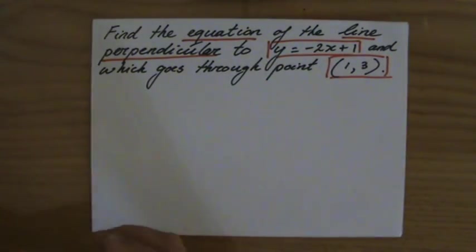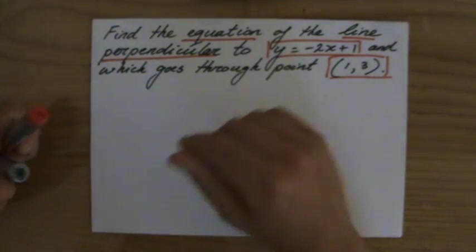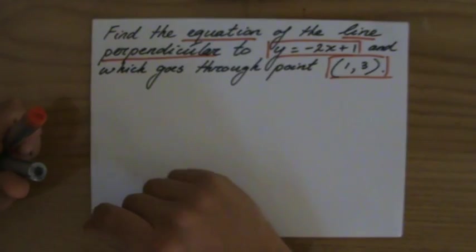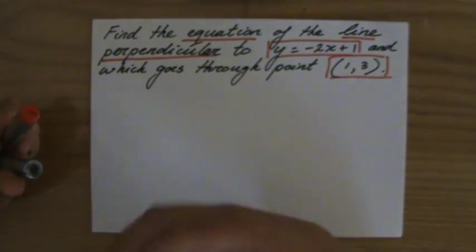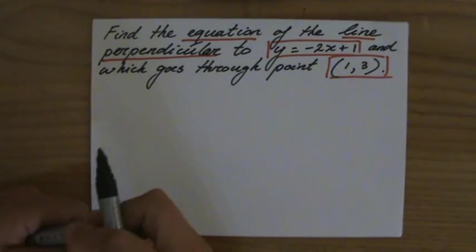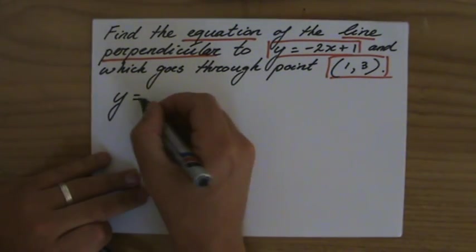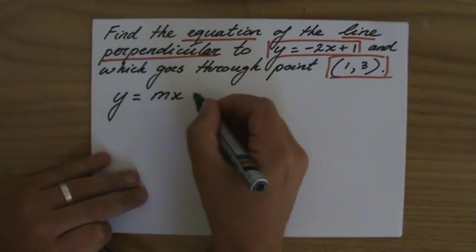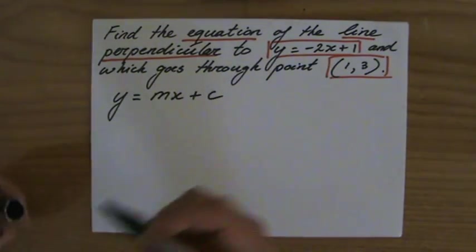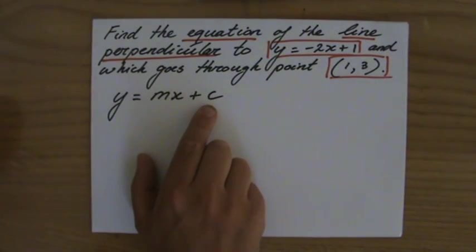Now I have to construct an equation. What is the general equation of a line? We tend to write that in gradient intercept form. So let's start by writing down y equals mx plus c, where m is the gradient and c is the y-intercept.